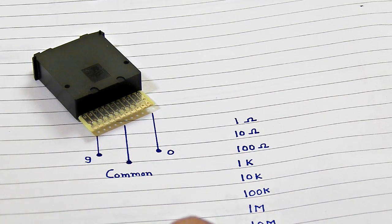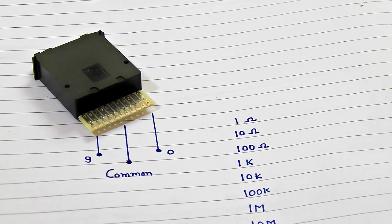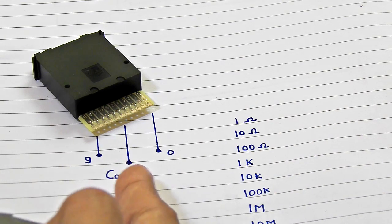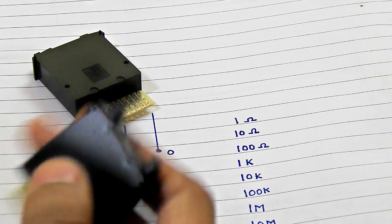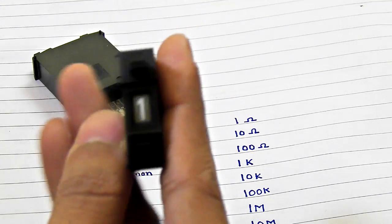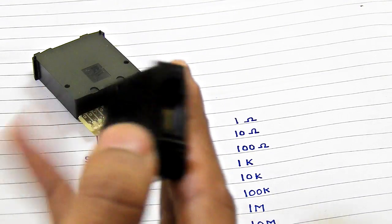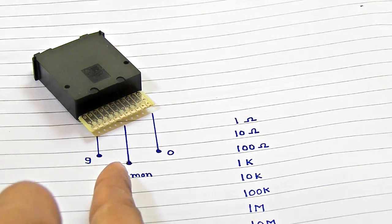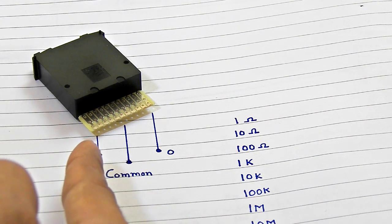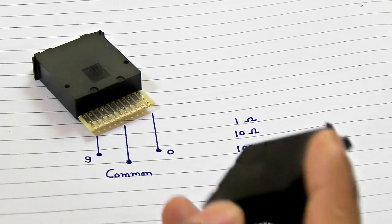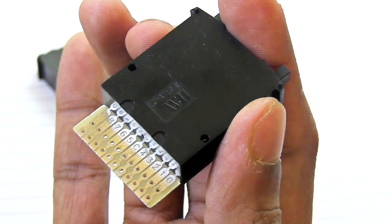What it will do basically is connect the common terminal to the digit that you have pushed in. So let's say it is now pushed onto the one, so the common terminal is connected to the first number pin. That's basically the working of this thumb wheel switch. You can take a quick look at how pins are arranged onto this thumb wheel switch.